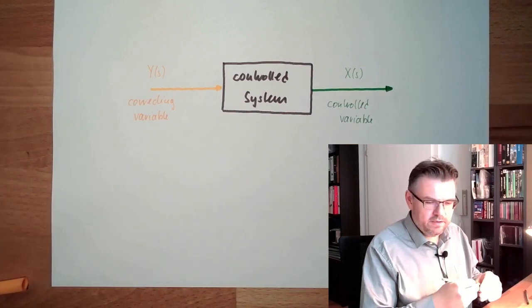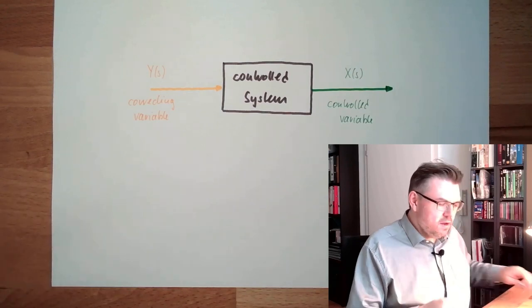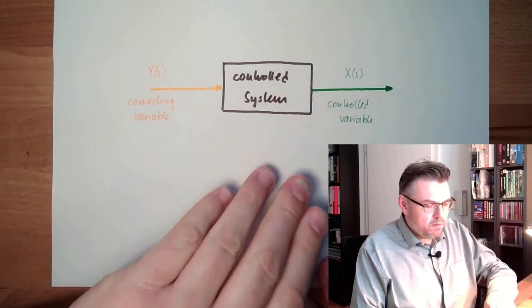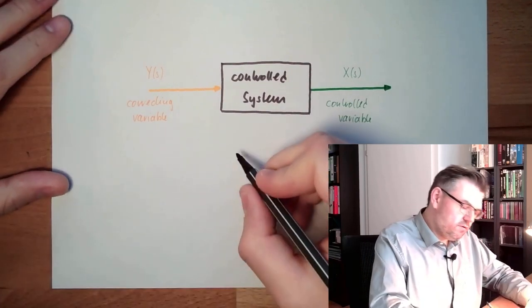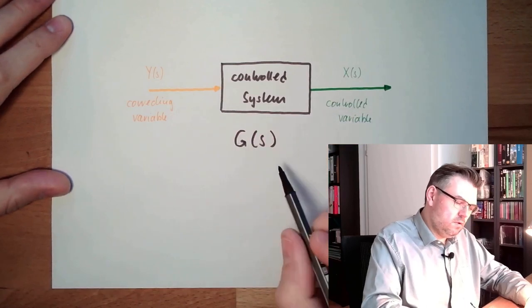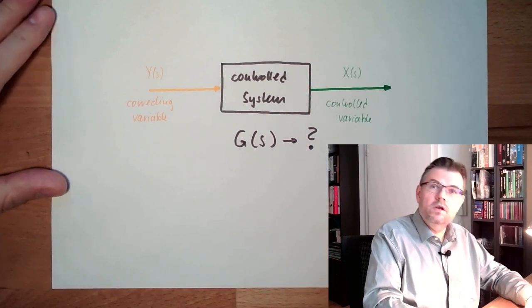I mentioned this already several times, but you know, learning is repeating. And this controlled system is transferring this correcting variable to the controlled variable by a transfer function g from s. This, we don't know.